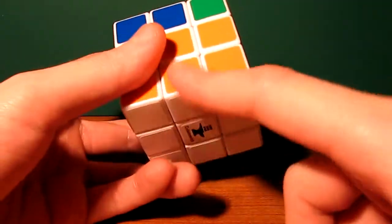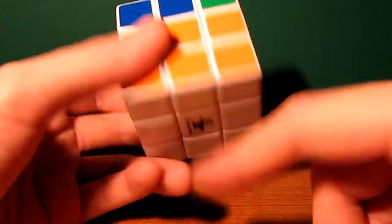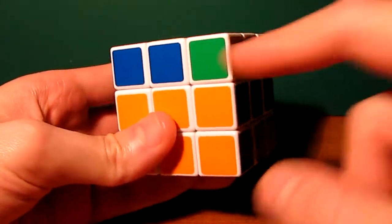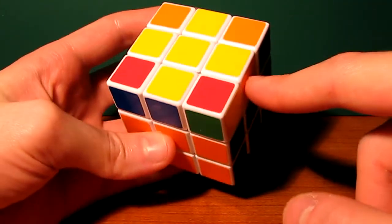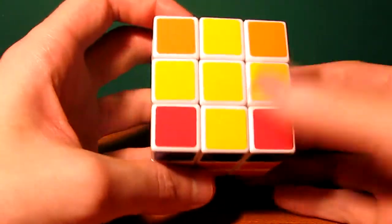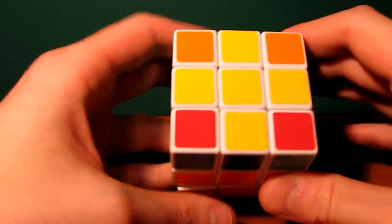It's similar to the first step in solving the cube where you form the cross, except for the top cross here, we don't need to be concerned about the edges being placed in the correct positions. We're going to worry about that in the next step, where we're going to move them around to the correct place. So all we want is a top cross, that's it.